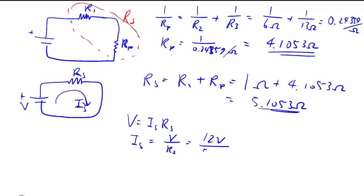So we can work out this IS is V over RS. So that's 12 volts over 5.1053 ohms, giving us 2.3, 2.4 amps.